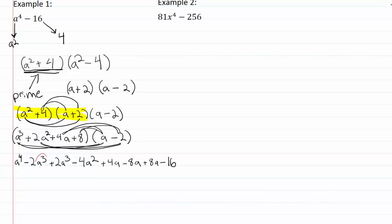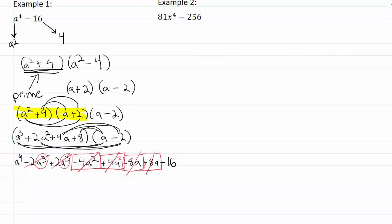Let's combine like terms: the minus two a cubed and plus two a cubed subtract out; minus four a squared and plus four a squared subtract out; minus eight a and plus eight a subtract out — and we're left with a to the fourth minus sixteen, just like our original expression.